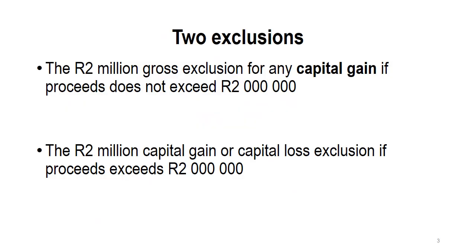You have to know what a primary residence is and what qualifies as a residence. Then you only need to know that there are two exclusions. You'll see in the textbook it goes on about how you apportion if part of the house was used for trade, but we don't look at any of that in EBAL2708. You only have to be able to do these two exclusions.